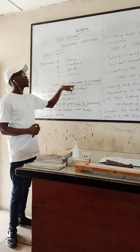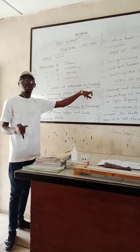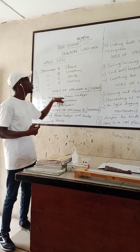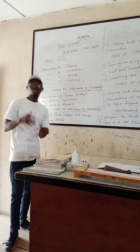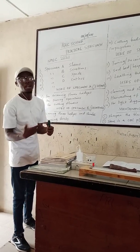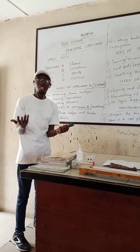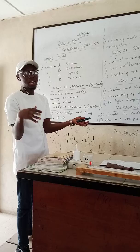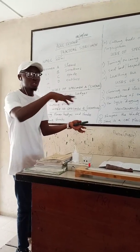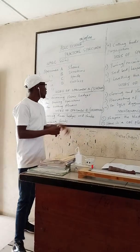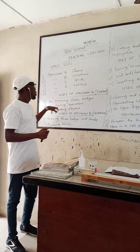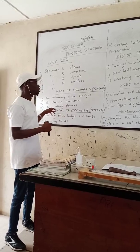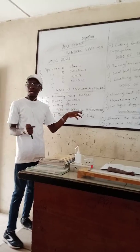The uses of Specimen A, which is shears: number one, it is used for trimming flower edges. Shears are the tool — similar to large scissors — that we use to trim flower edges. We also use them for trimming and cutting flowers.